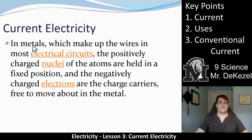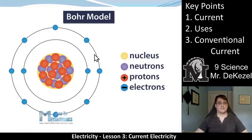Current electricity. In metals, which make up the wires in most electrical circuits, the positively charged nuclei of the atoms are held in a fixed position. This is the same thing that I said previously. Positively charged protons, the nuclei that are positively charged, they are stationary. They do not move. The negatively charged electrons, what we call the charge carriers, are free to move about in the metal, which is why they can move continuously down a metal wire.